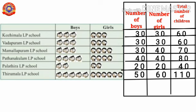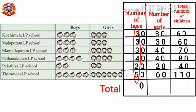Then let's find the total number of boys, total number of girls, and also the total number of children. To find the total number of boys: in the 1's place, all 0's add together, we get 0. Then 3+3=6, 6+3=9, 9+4=13, 13+2=15, 15+5=20. So 200 boys are there.